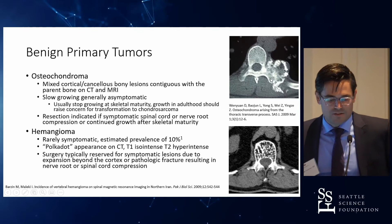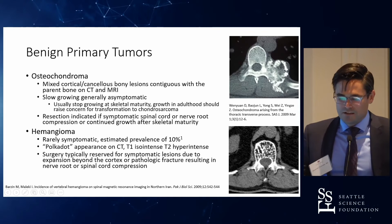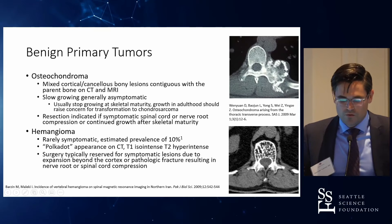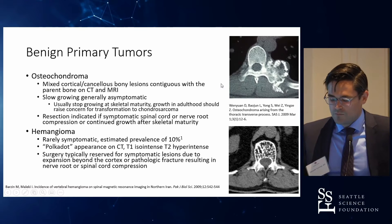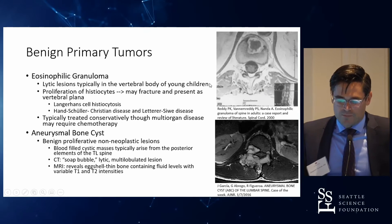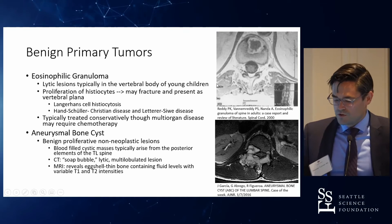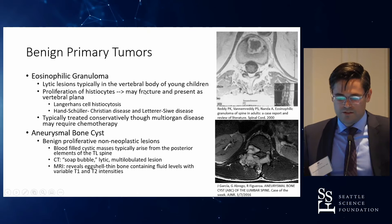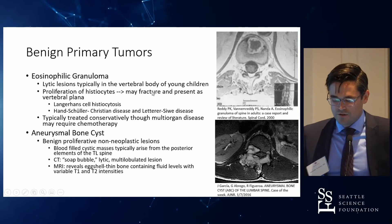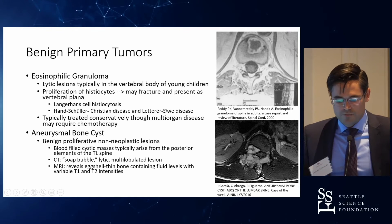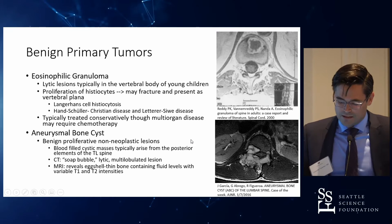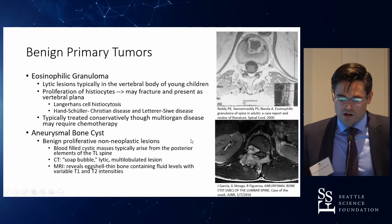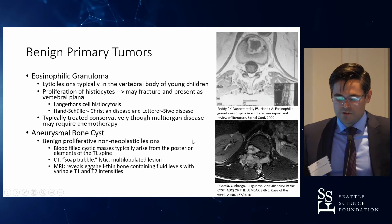Osteochondromas typically stop growing at skeletal maturity and are not symptomatic unless they grow to a point where they cause neural impingement. Hemangiomas are the most common primary tumors we see in the spine, but certainly not what we're dealing with in a case such as this. You have eosinophilic granulomas, which can sometimes be a form of multi-organ disease such as Langerhans cell histiocytosis, but can be treated with observation or chemotherapy. And aneurysmal bone cysts, which are not neoplastic but have a very characteristic soap-bubble, lytic, multi-lobulated appearance on MRI and CT.